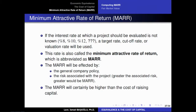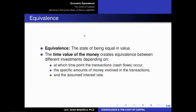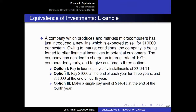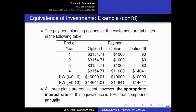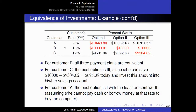In this video we are going to learn about the terminology 'minimum attractive rate of return' for the first time, and we are going to refer to the problem we have seen at the beginning of this chapter. We had to purchase a certain product from a company with different payment options. If we assume an 8% interest rate, option one has the smallest present value, but at 12%, option three has the smallest present value. Depending on the pertinent interest rate assumed, a different option may be preferable.